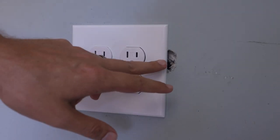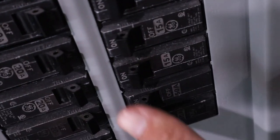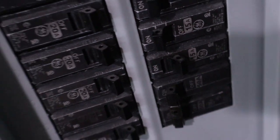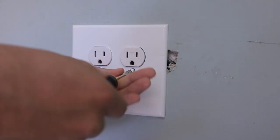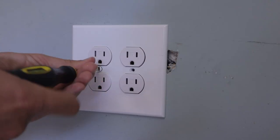The first thing I want to do before removing this cover plate is shut off the circuit breaker that's supplying power to these outlets, just in case while I'm working on this I don't accidentally shock myself. Now the circuit breaker is off, now I can remove the cover plate.